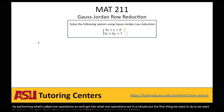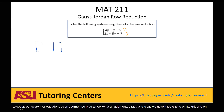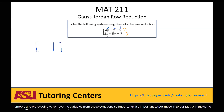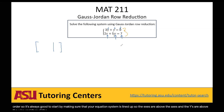An augmented matrix looks like this — on one side we have coefficients for our x's and our y's, and on the other side we have our answers. We're going to look at just the numbers and remove the variables from these equations. It's important to put these into our matrix in the same order, so the x's are above the x's and the y's are above the y's, and all the plain numbers are on the right side.